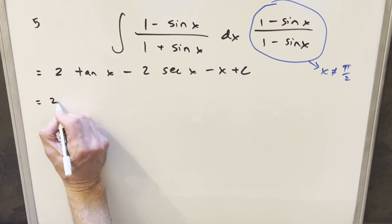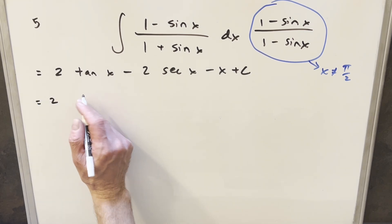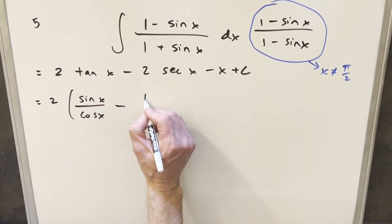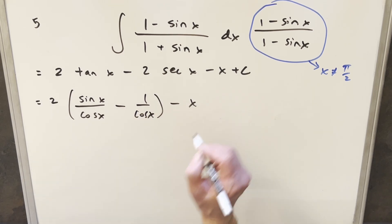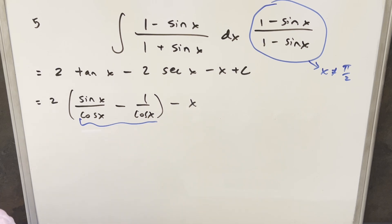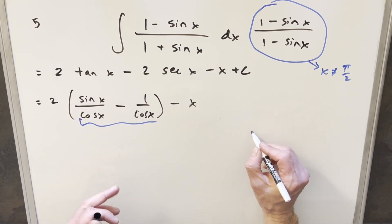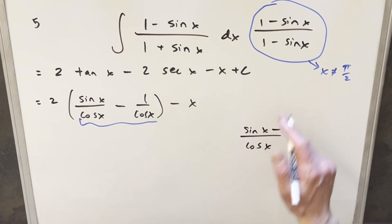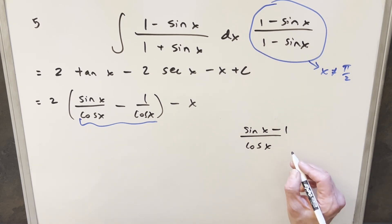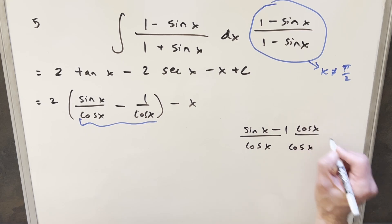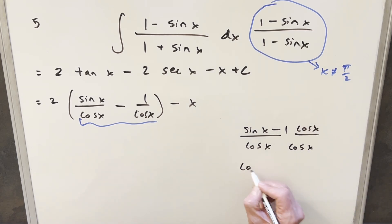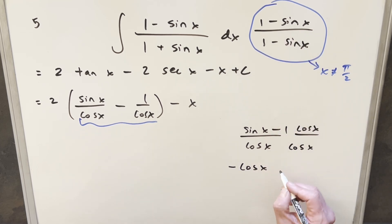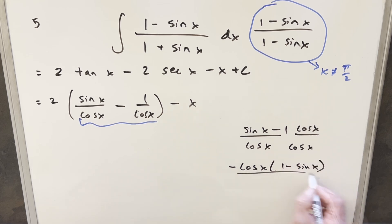I'm going to work with the expression by factoring a 2 out: we can write 2(tan x minus secant x). Rewriting in terms of sine and cosine, that's 2 times (sine over cosine minus 1 over cosine x). Focusing on that piece, with a common denominator, I can write this as (sine x minus 1) over cosine x. What I want to do is bring (1 minus sine x) back into the problem by multiplying numerator and denominator by cosine x.